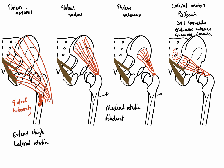Just inferior to piriformis we have superior gemellus, which runs from the ischial spine straight across to the greater trochanter. Coming from beneath superior gemellus is inferior gemellus, which passes in a similar direction but originates from the ischial tuberosity and runs across toward the greater trochanter.